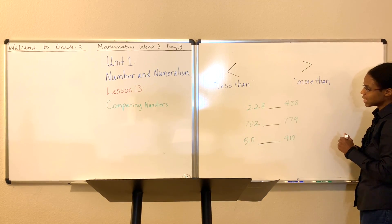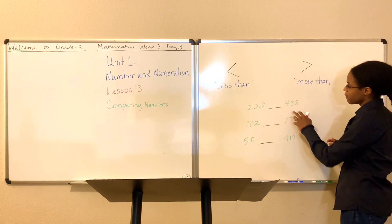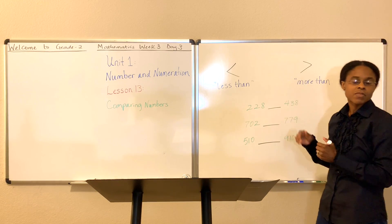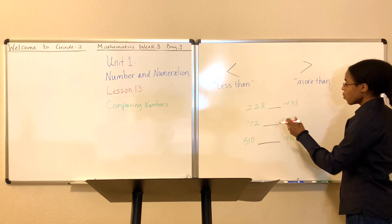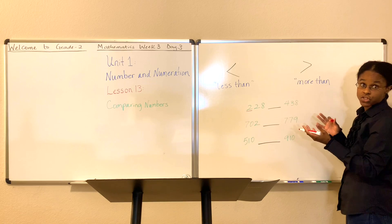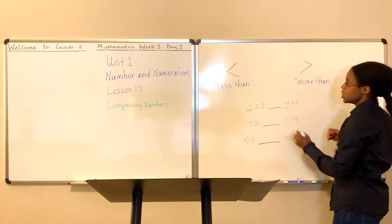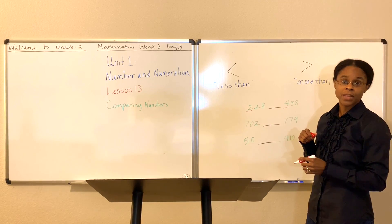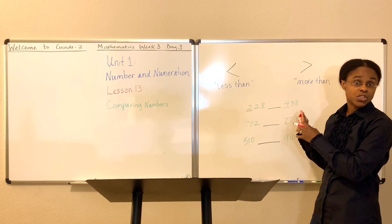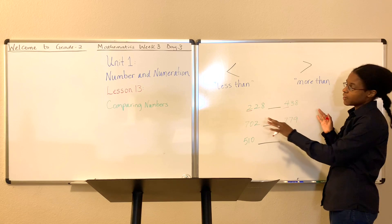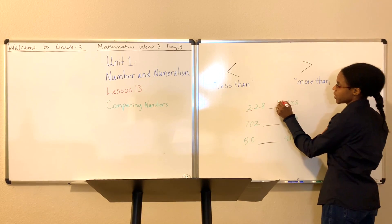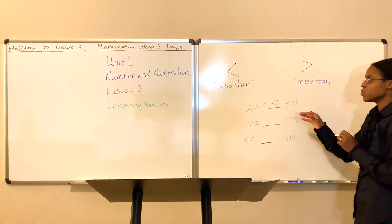So anytime you see the opening of the mouth, that's going to be facing the direction of the greater number. Let's get started. So we have the number 228 compared to 438. Which is the greater number? Which direction does our symbol face? Well, let's compare. You always start with the hundreds value or start with the greater value digit. So we're comparing two to four. Which is greater, 200 or 400? 400 is greater. So even without going any further and analyzing any other digit, you can just stop right there and say 438 is greater than 228.